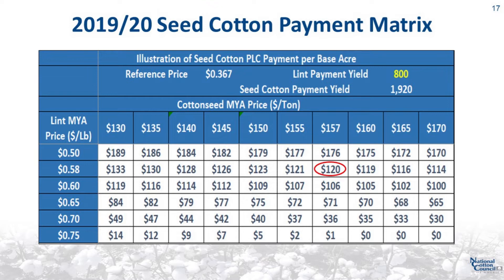This table shows the 2019-20 PLC payment calculation for a range of payment yields based on the September 2019 WASDE price projections. The 2019-20 marketing year began on August 1, 2019, so keep in mind that this is a very early projection. Based on the 2019-20 price estimates of 58 cents per pound for lint and $157 per ton for cotton seed, projected PLC payments are much higher than for the 2018-19 marketing year. A payment matrix to estimate 2019-20 seed cotton PLC payments is available on the NCC website in the same Excel file as the price matrix. At the top of the worksheet, you can enter the lint payment yield for a particular farm, and the matrix shows the seed cotton PLC payment for various lint and cotton seed price combinations.